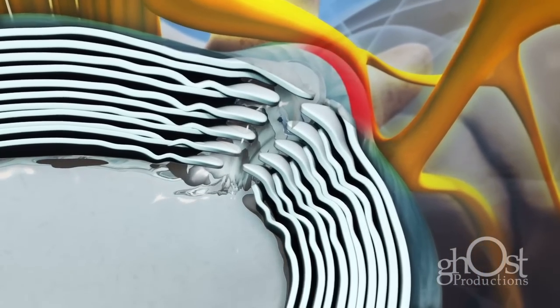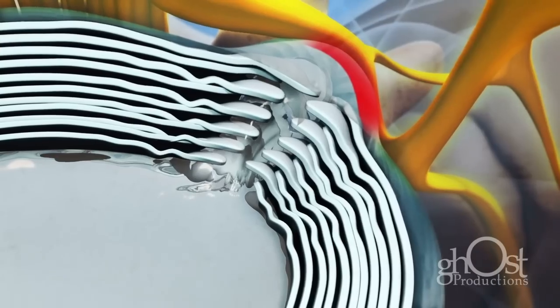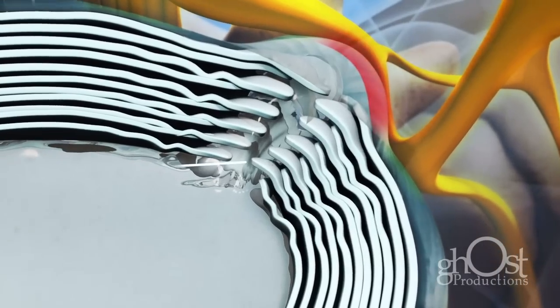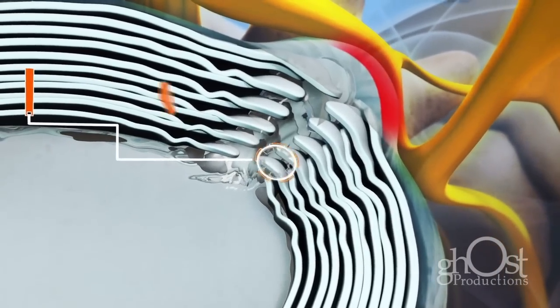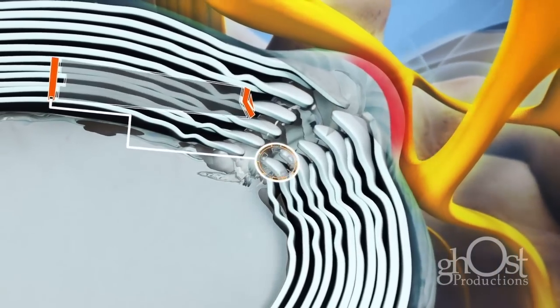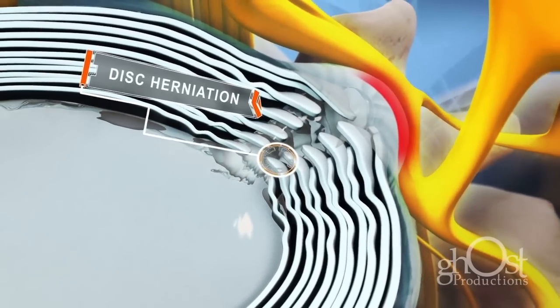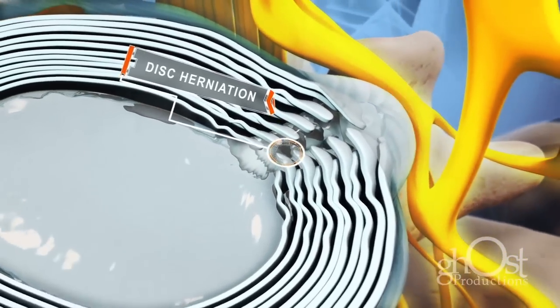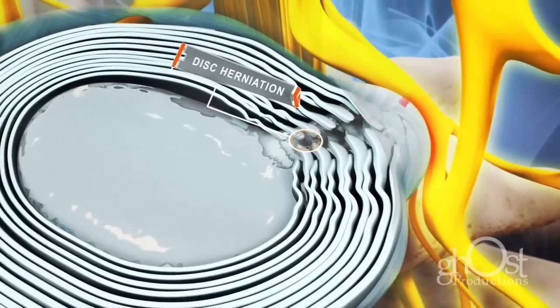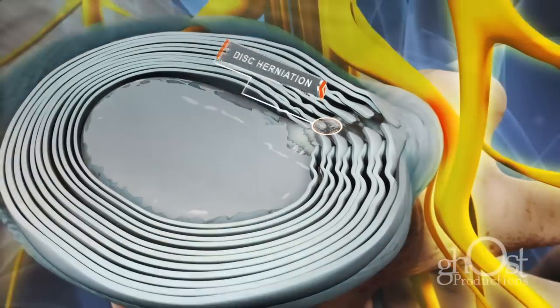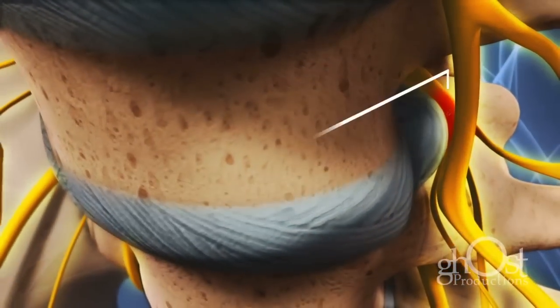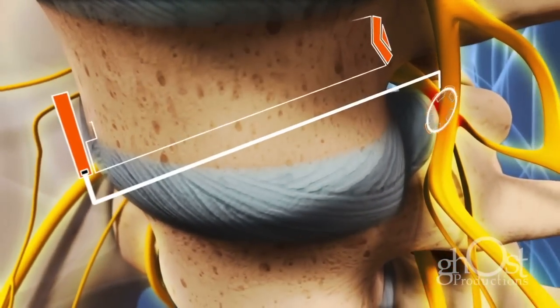In the case of a lumbar herniated disc, the weak spot in the annulus fibrosus is directly underneath the spinal nerve root, so a herniation in this area can put direct pressure on the nerve.